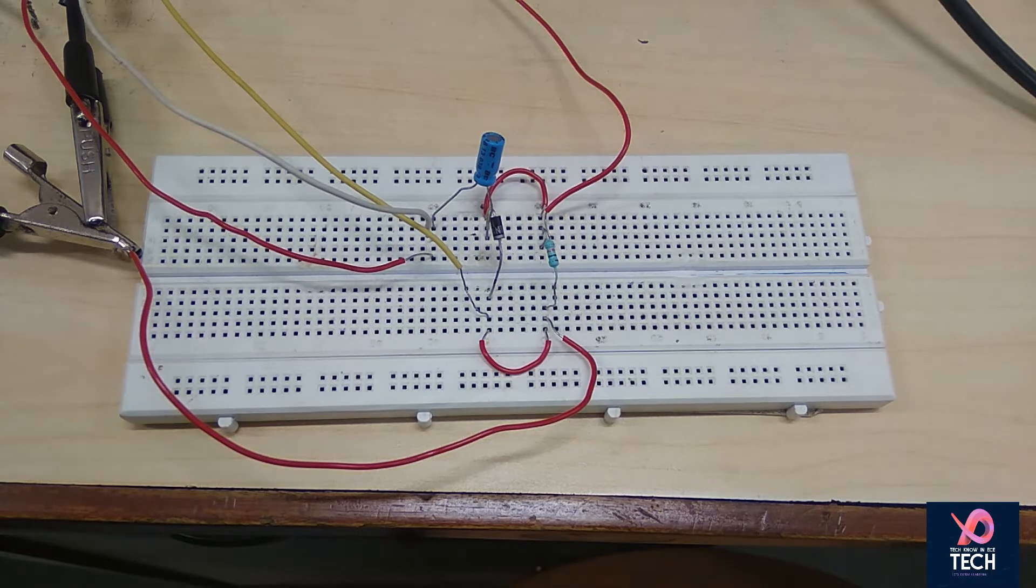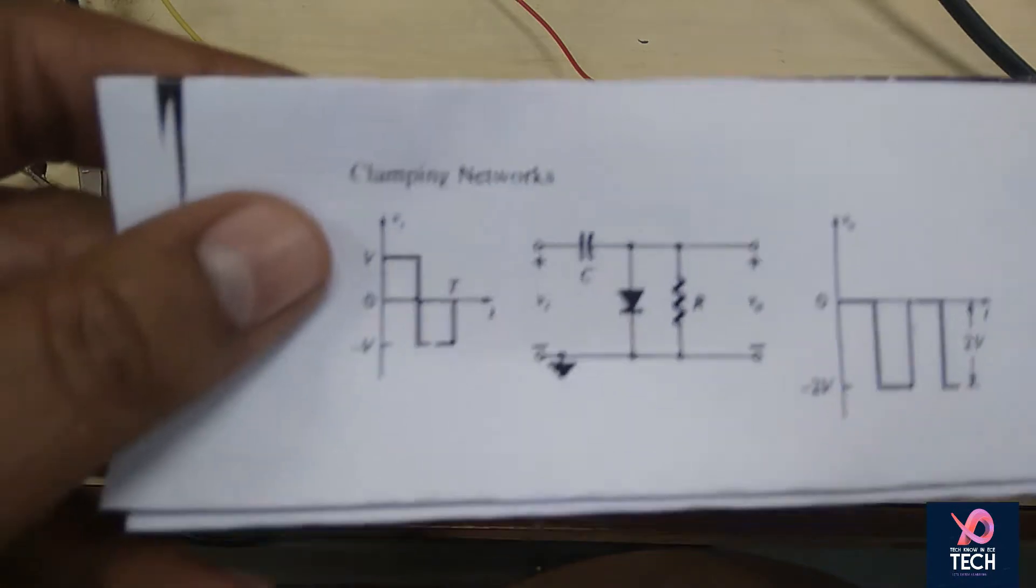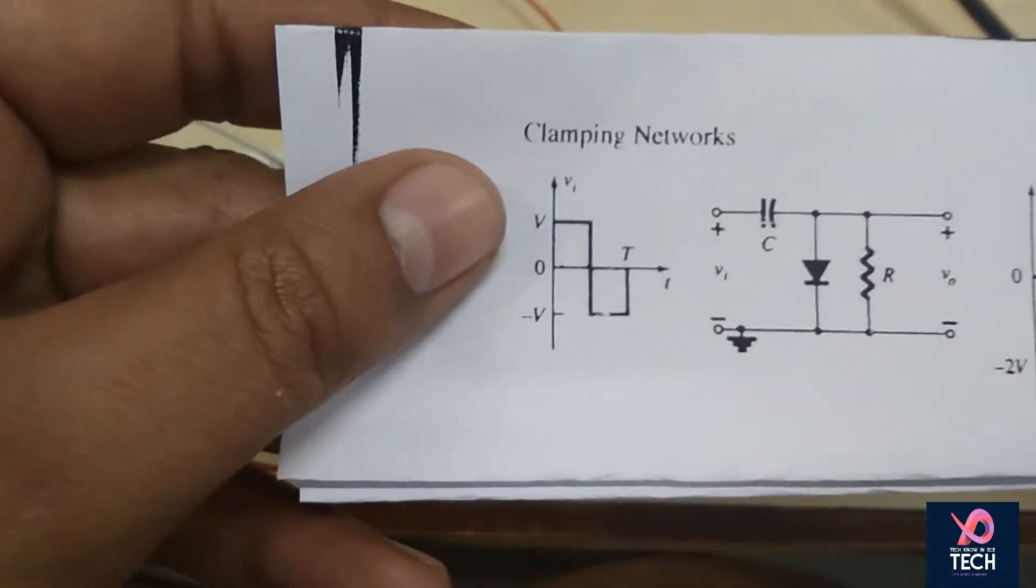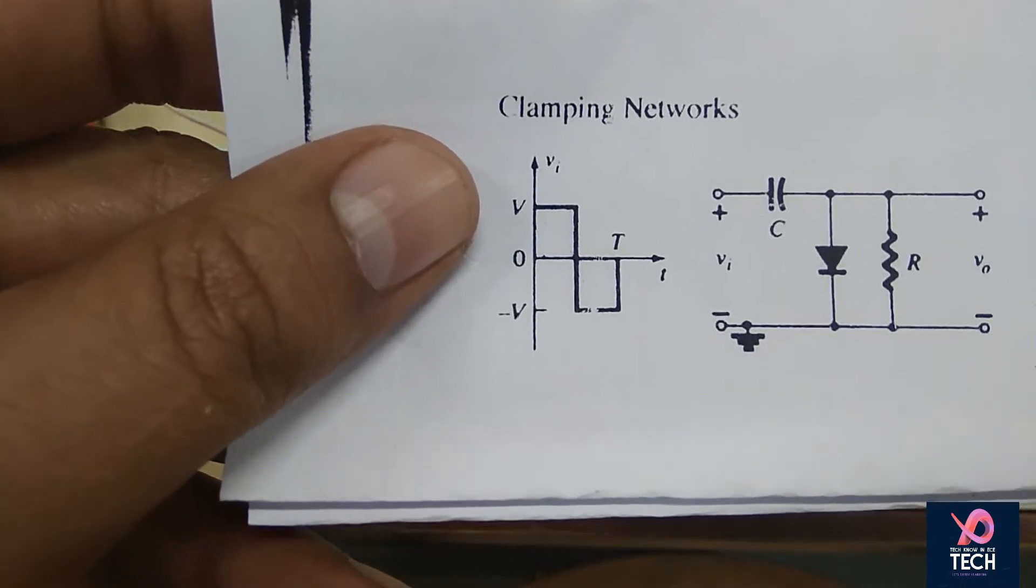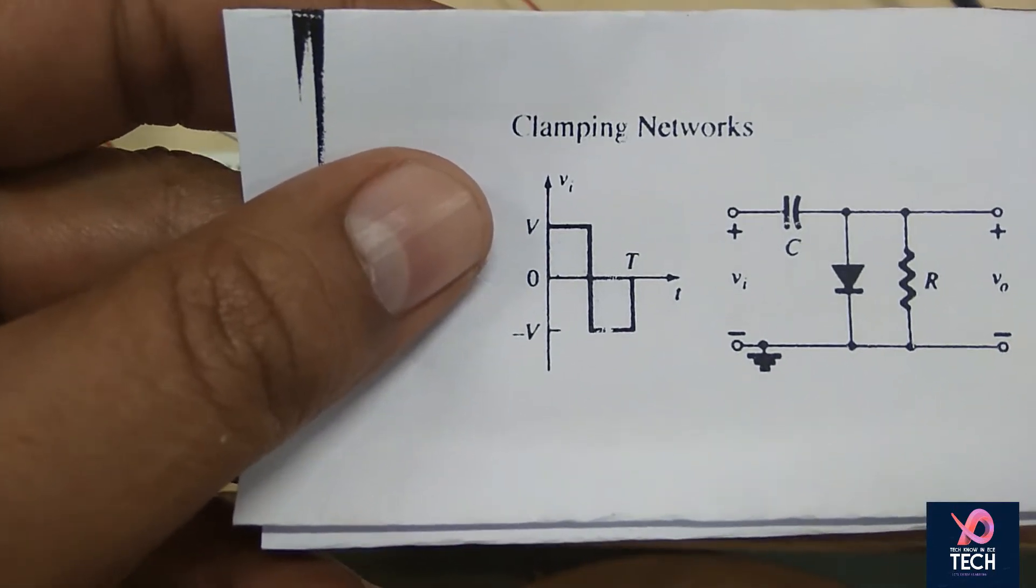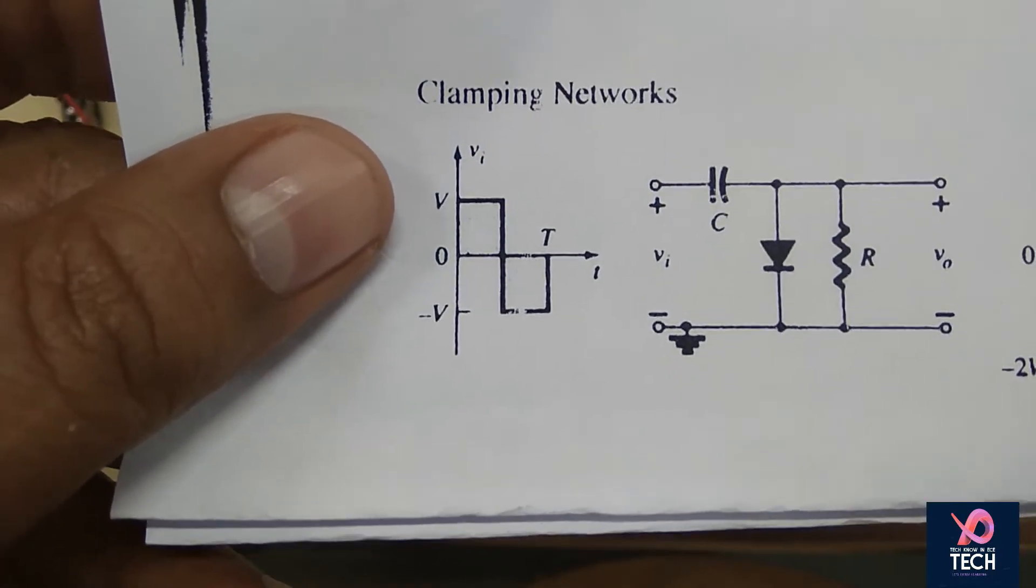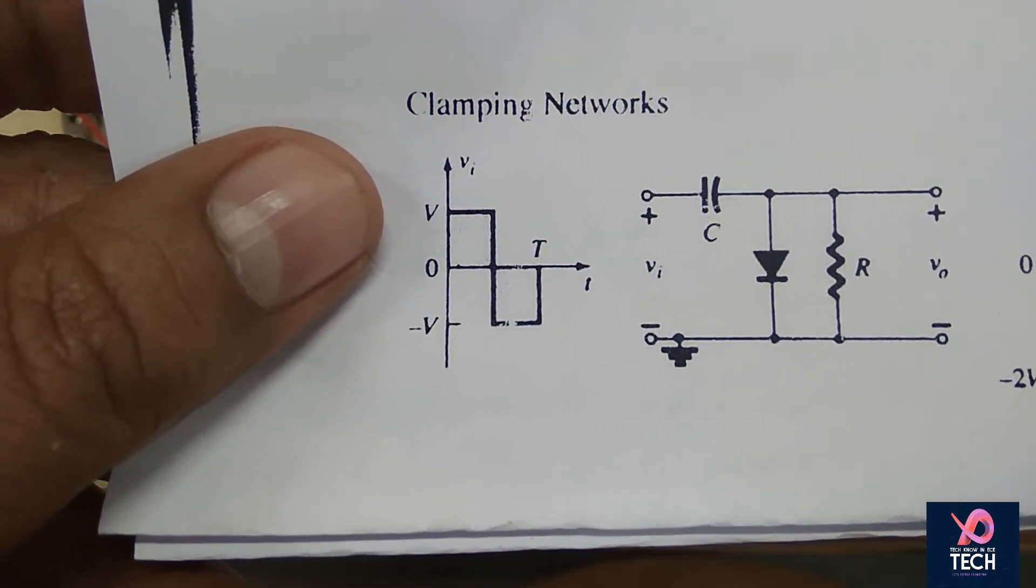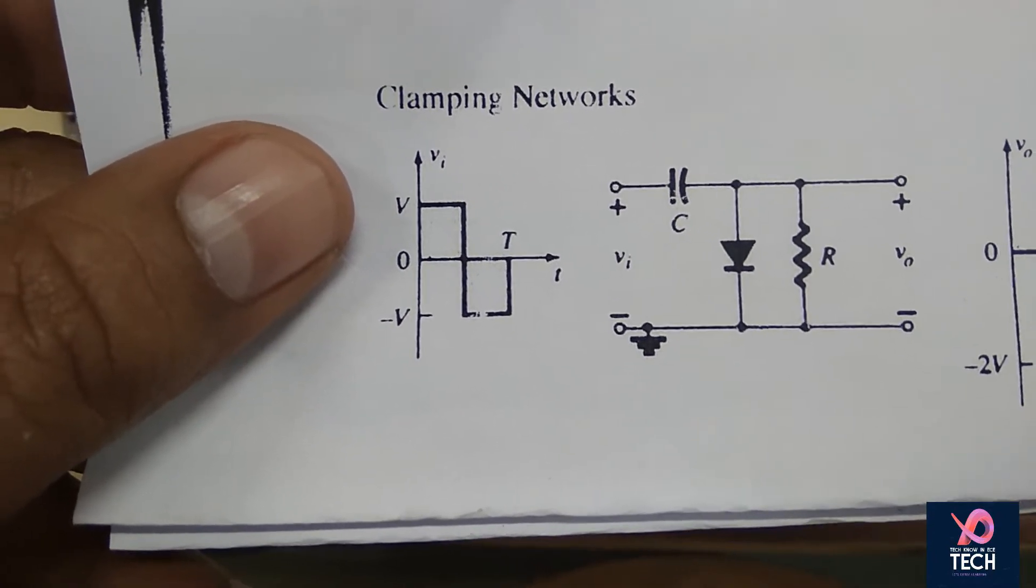So the circuit for the same is here. Here you can see that we are having a capacitor, a PN diode, and a resistance. So we are applying voltage at the terminal VI and we are getting the voltage output across the output terminal, that is V0.